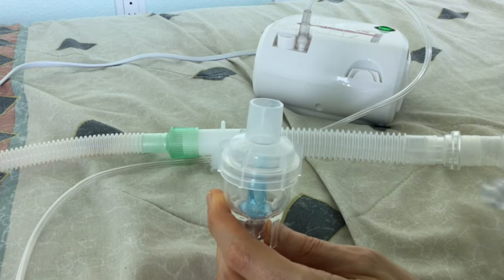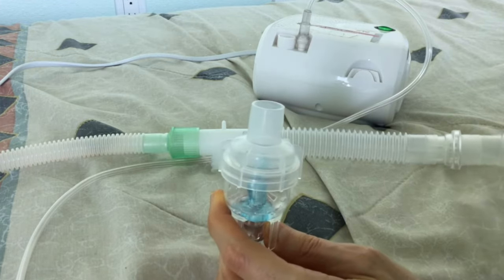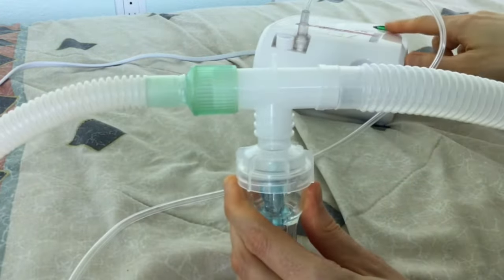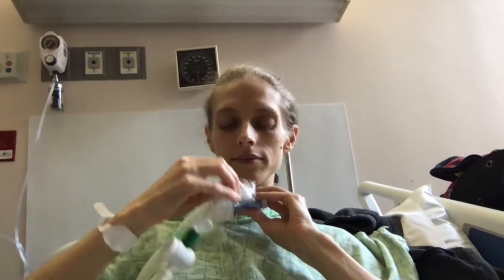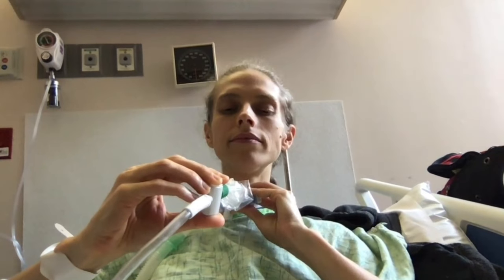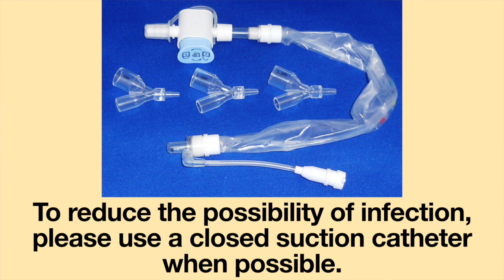Also, running saline through a nebulizer can keep the airways moist and can break up secretions. In some individuals with a tracheostomy tube, suctioning may be a great way to remove secretions from the airway. To reduce the possibility of infection, please use a closed suction catheter when possible.